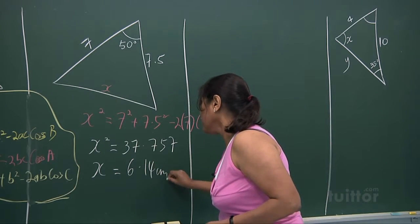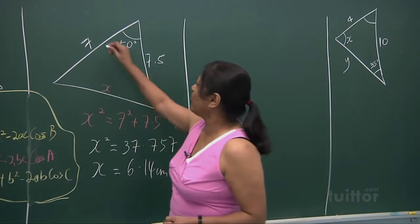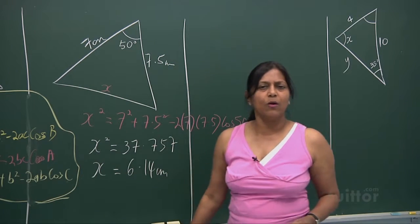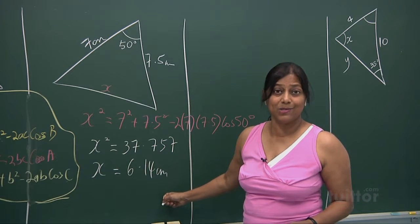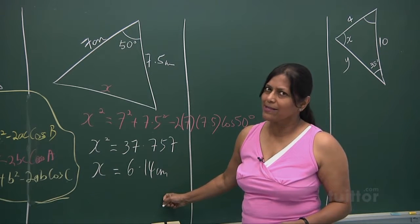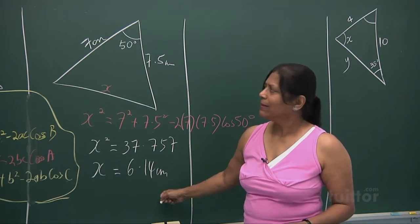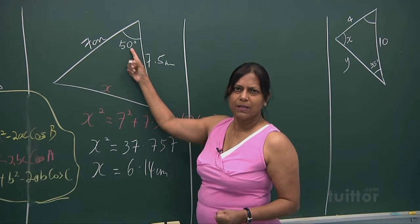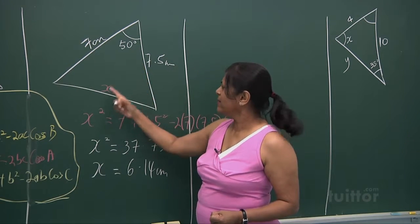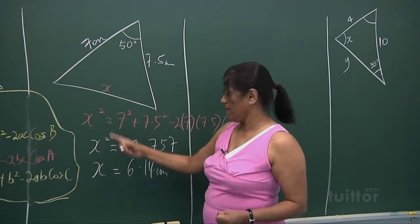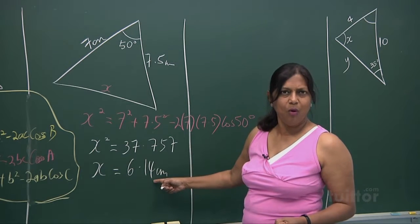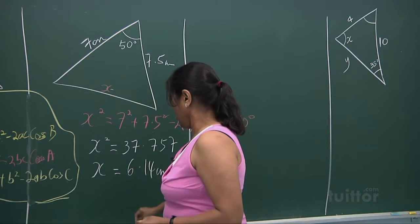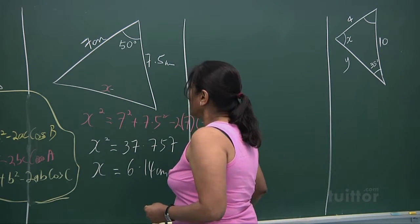Find the square root of 37.757 and you get 6.14 — write your units of measurement. Is the answer reasonable? 50 degrees is relatively small, so it makes sense it faces the side of 6.14.